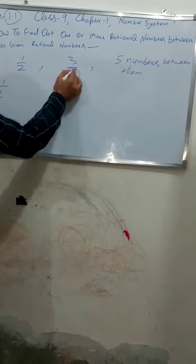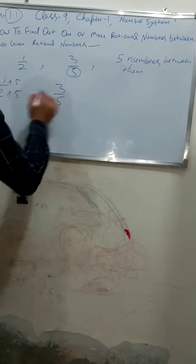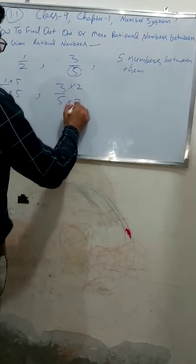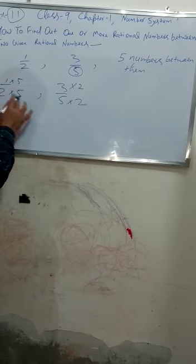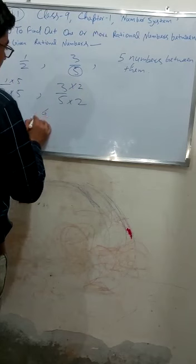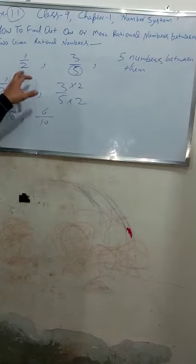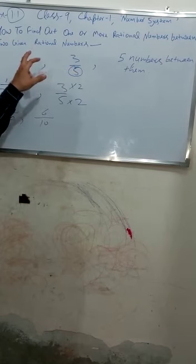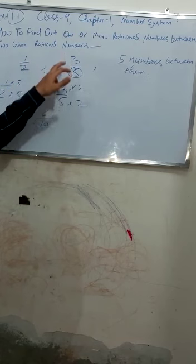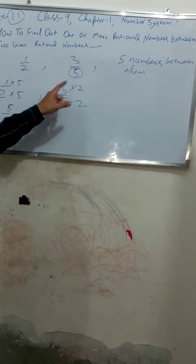The first number is 1 upon 2 — we will multiply by 5 in both numerator and denominator. The second number is 3 upon 5 — we will multiply by 2. So 1 upon 2 becomes 5 upon 10, and 3 upon 5 becomes 6 upon 10. We do this cross-multiplication by the other fraction's denominator value in order to make the denominators the same.